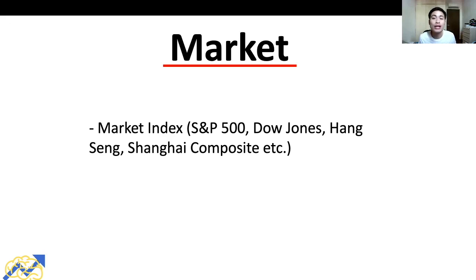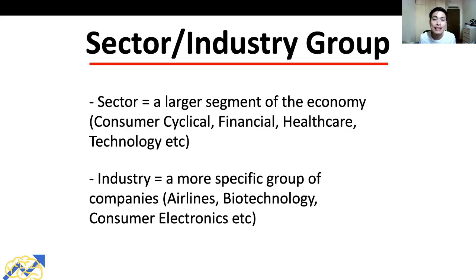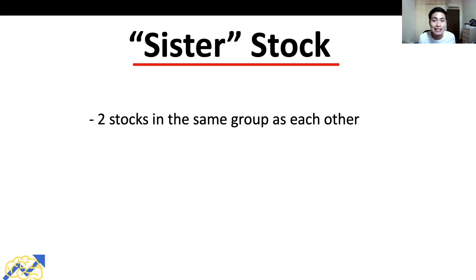The second element is to trade with the sector and industry group. A sector is a larger segment of the economy — for example, consumer cyclical, financial, healthcare, and technology are all different sectors. An industry is a more specific group of companies within a sector; examples include airlines, biotechnology, and consumer electronics. The third element Jesse Livermore considered for his top-down trading is the sister stock — a stock in the same industry or sector as the stock you are analyzing.